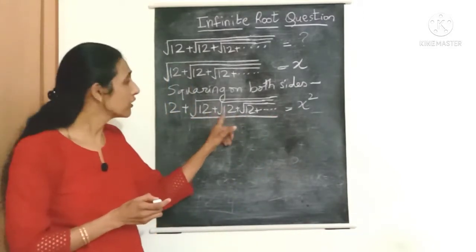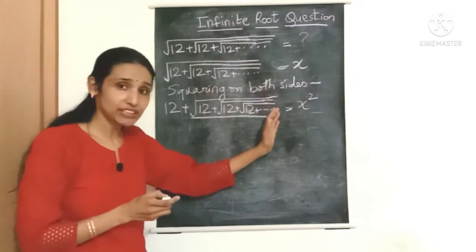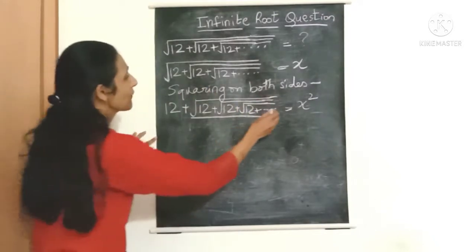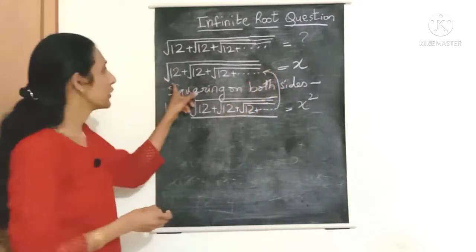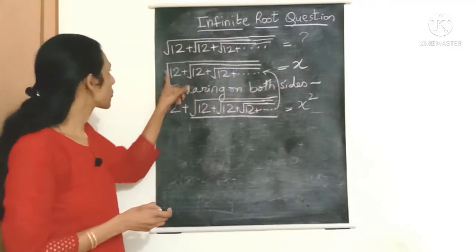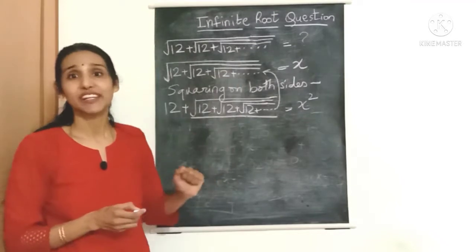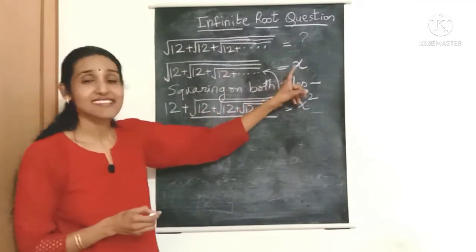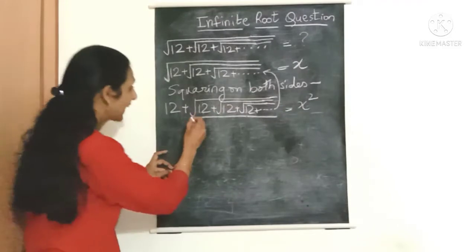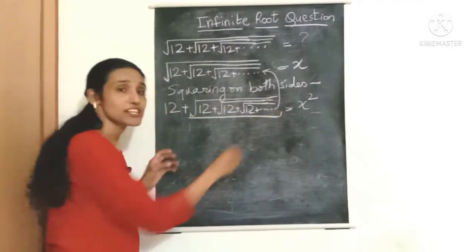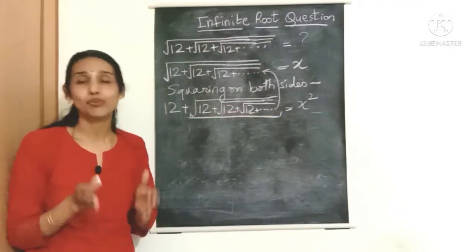As you may have observed, this entire expression over here, square root of 12 plus square root of 12 which goes on and on till infinity, is the same as this expression over here. Just have a look: square root of 12 plus square root of 12, which also continues till infinity.